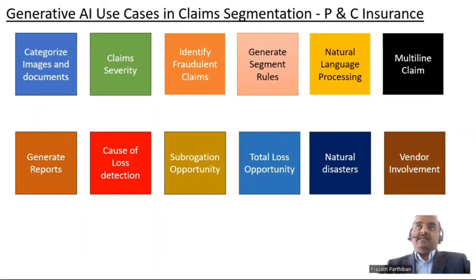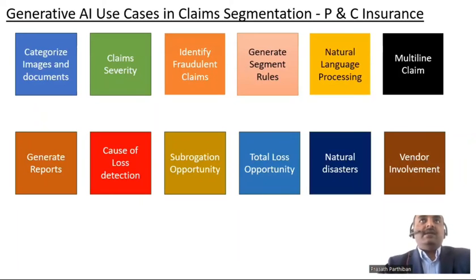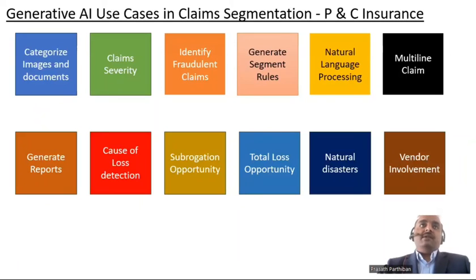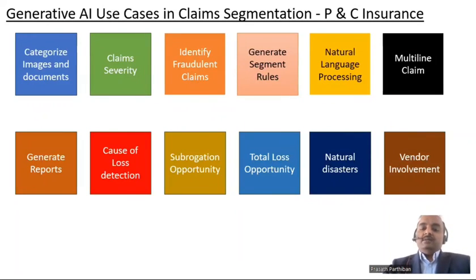Subrogation opportunities — when you get a claim, it is very important to understand who was responsible for the accident. If you upfront determine that a particular claim could have a subrogation opportunity — meaning it's not the insured's responsibility but somebody else's — the insurance company can assign it to the correct adjuster based on segmentation. Total loss opportunity — if AI can read the images or loss location details and determine this is a total loss, you can directly segment the claim so it gets assigned to the correct adjuster without extra admin work.